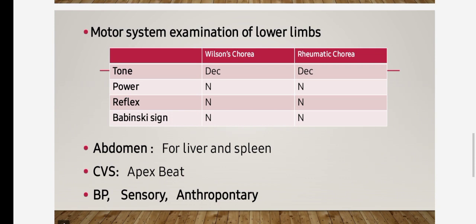While power, reflexes, bulk, and Babinski will be normal, do abdominal examination for hepatosplenomegaly. Do CVS examination - S1 and S2 - and also locate for the apex beat. If you still have time, do blood pressure.